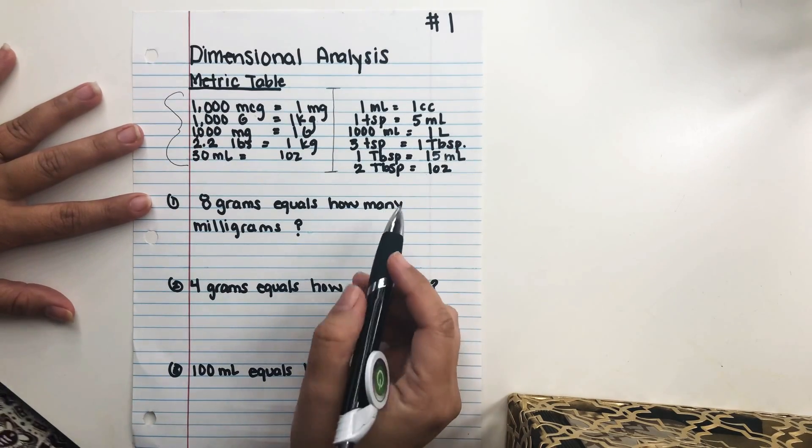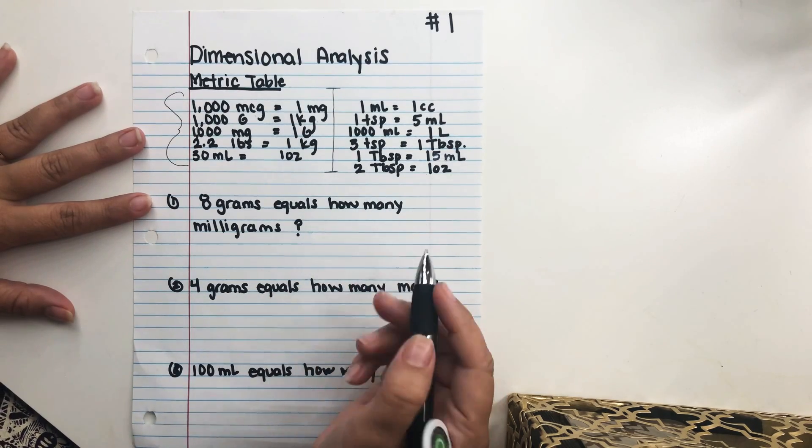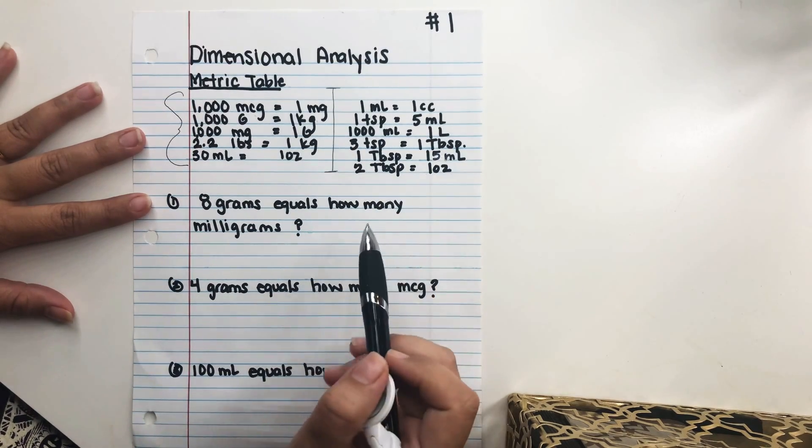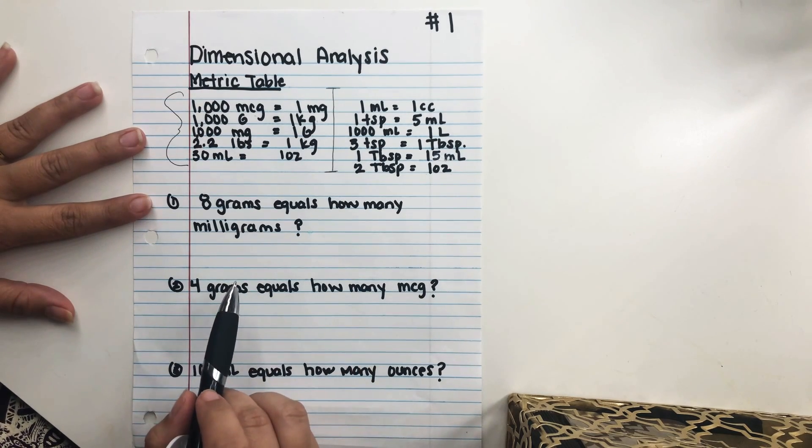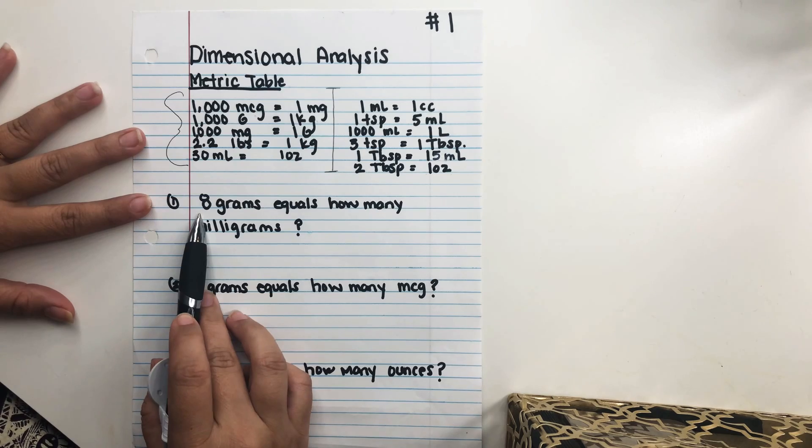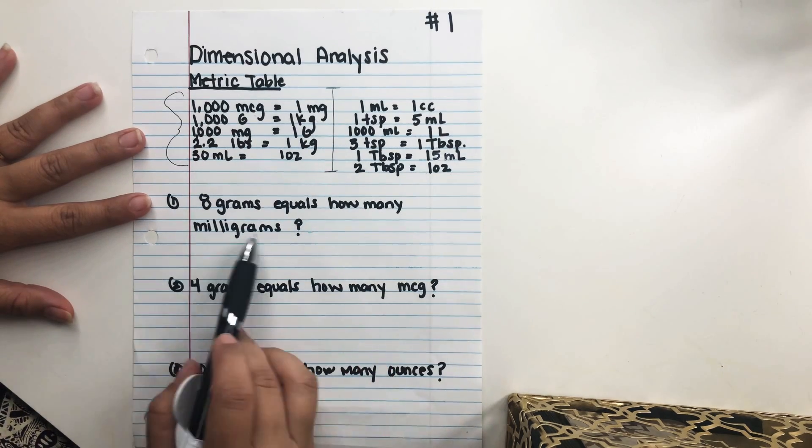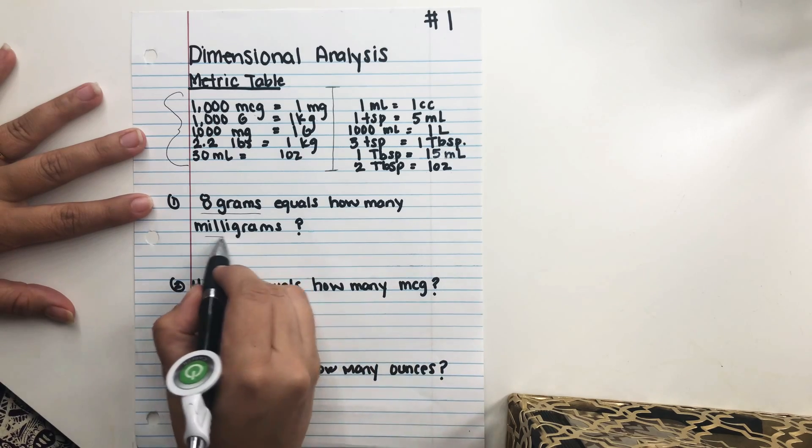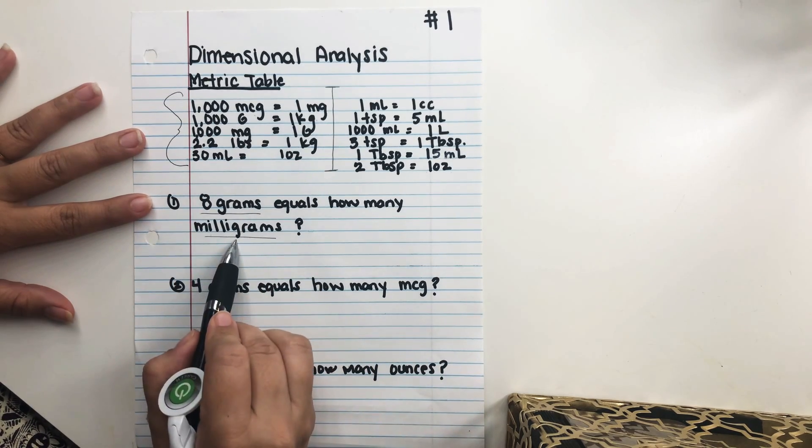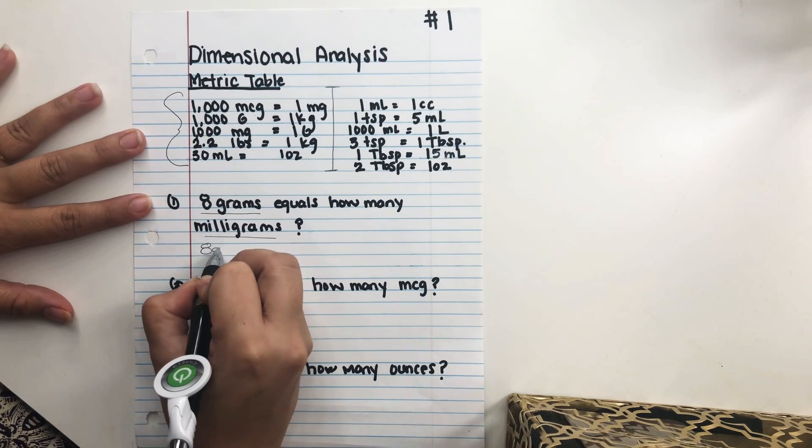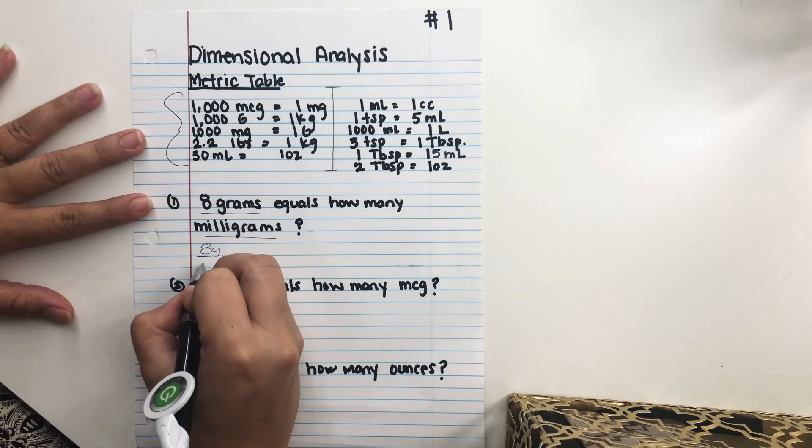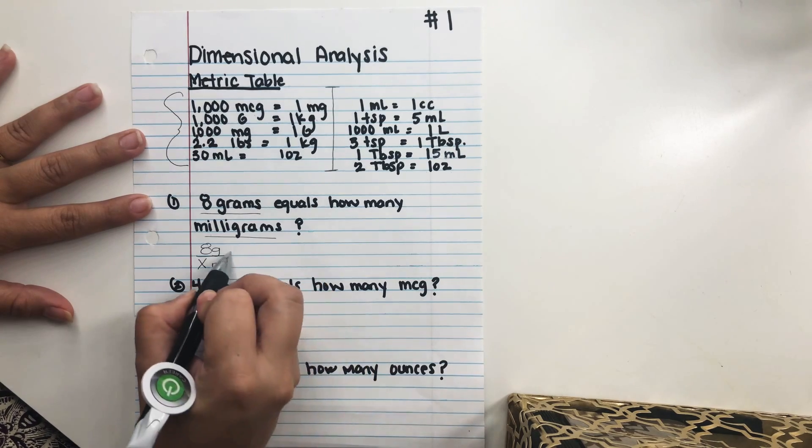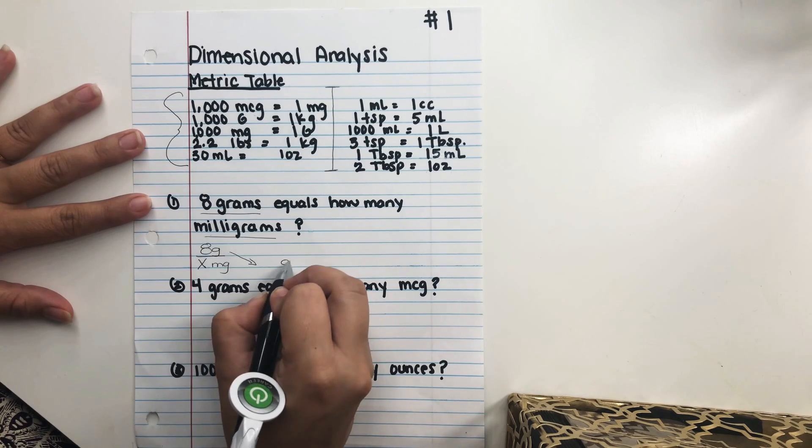Okay, so we're gonna go ahead and start with the first question. We will be using this table because since we are newbies or new nursing students, we will need to have a reference until we have a chance to memorize this. But we're gonna go ahead and do an easy conversion using dimensional analysis. So the first problem says 8 grams equals how many milligrams? So how we're gonna set this problem up is that we're gonna go ahead and use the information that we have. So we have 8 grams and we need milligrams. So we're gonna go ahead and put 8 grams on top and then we need milligrams. We're gonna just go ahead and label this as X. And in dimensional analysis, we work diagonally. So if we have grams here, we have to have grams here.